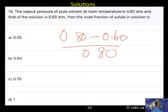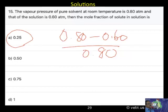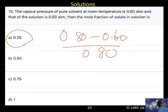The answer is 1 by 4, that is 0.25. So: 0.20 divided by 0.80 equals 1 by 4, which is 0.25. Option A is the correct answer.